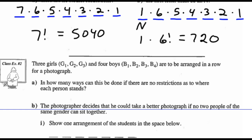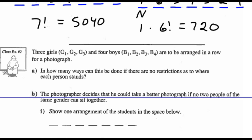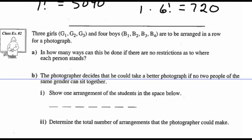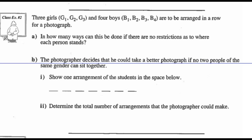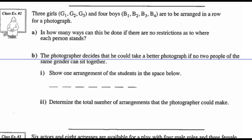Example 2: 3 girls and 4 boys are to be arranged in a row for a photograph. How many ways can this be done if there are no restrictions as to where each person stands? There are 7 people — 3 girls and 4 boys — so there are 7 factorial ways this can be done.